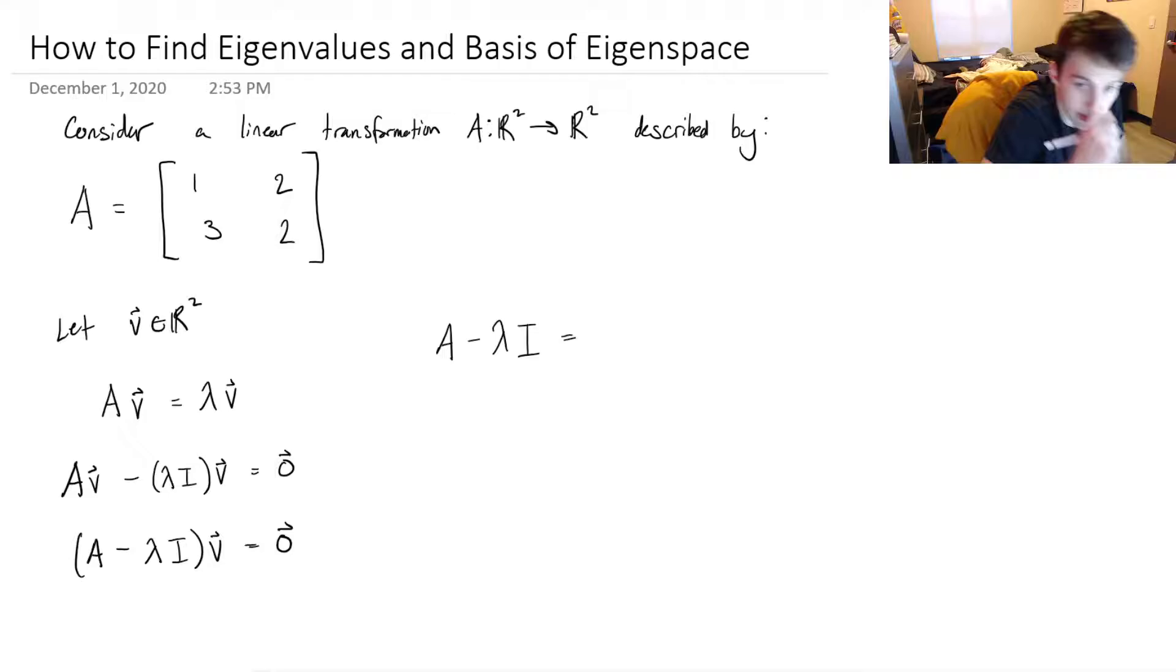Remember, the identity matrix just has 1s in every entry of the diagonal. Every other entry is a 0. So if I were to subtract these matrices, I would just end up with subtracting lambda from each of my diagonals, and all the other entries would stay the same: 3, 2.